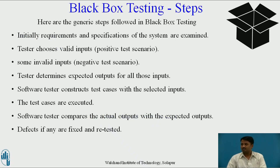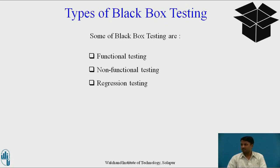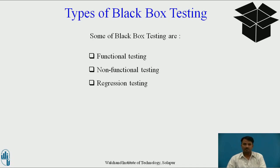Types of black box testing: functional testing is related to functional requirements of a system and is done by the software tester. Non-functional testing is not related to testing a specific functionality, but non-functional requirements such as performance, scalability, and usability. Regression testing is done after code fixes, upgrades, or any other system maintenance to check that new code has not affected the existing code.